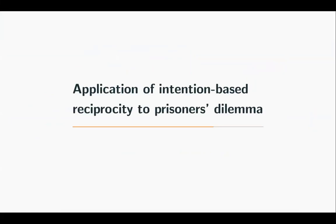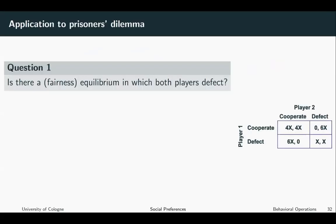We want to apply the intention-based reciprocity model to a prisoner's dilemma. Let us consider the following prisoner's dilemma. Here I wrote down the normal form of the game, so we have two players which can either cooperate or defect. You see that if both cooperate, they are better off than in the case where both will defect. However, from an individual perspective, defecting is always better than cooperating.